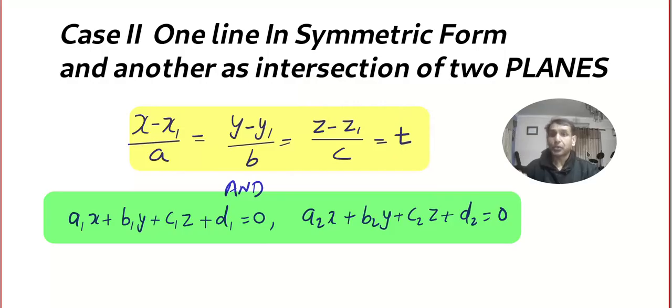In Case 1 I told you both the lines are in symmetric form. Now in Case 2, one is in symmetric form - I colored it in yellow - and the second one is given as the intersection of two planes.